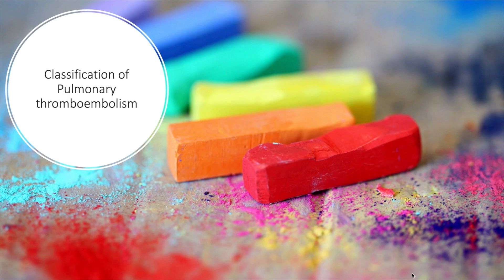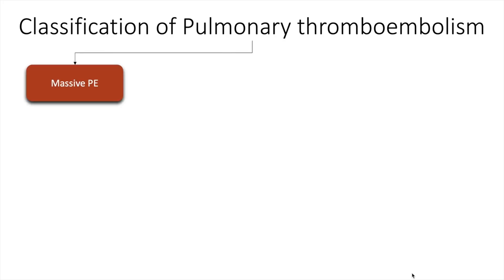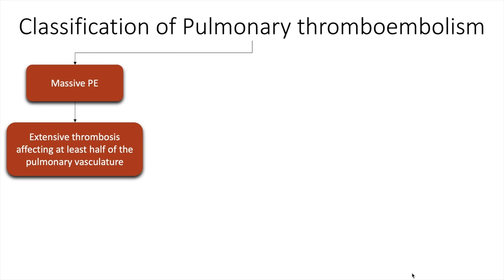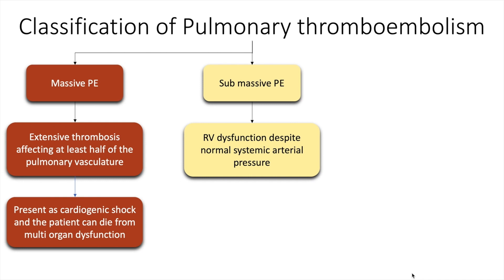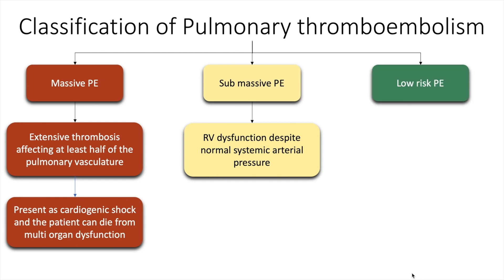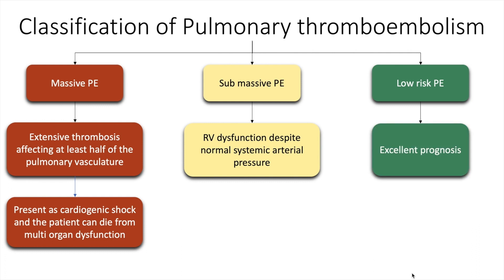Pulmonary thromboembolism may be classified as massive when there is extensive thrombosis affecting at least half of the pulmonary vasculature; such patients would present as cardiogenic shock and can die from multi-organ dysfunction. In submassive PE, there is RV dysfunction despite normal systemic arterial pressure. Patients with low-risk PE have an excellent prognosis.